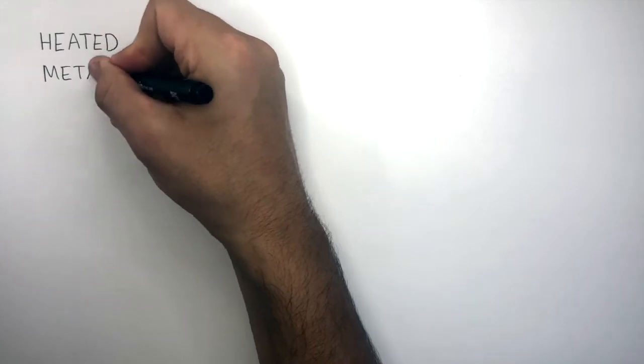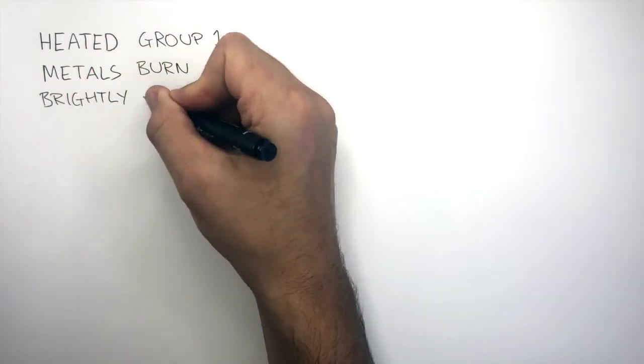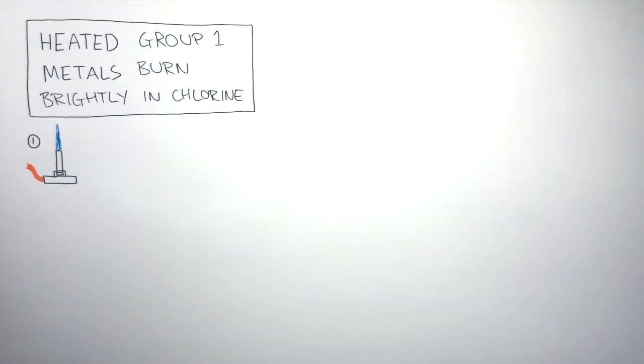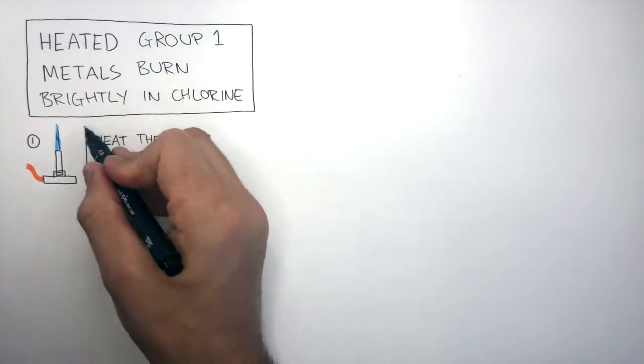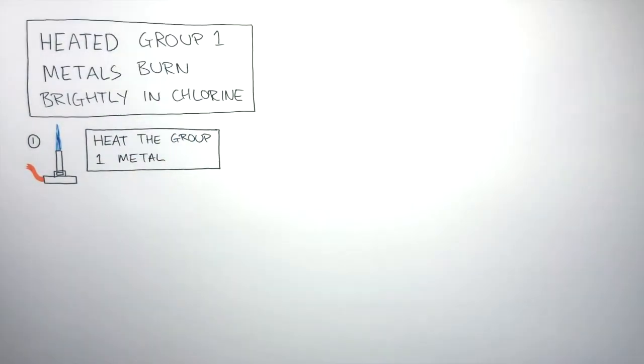So the major observation in this chemical reaction is heated Group 1 metals burn brightly in chlorine. To carry out this experiment in a laboratory, you need a Bunsen burner. This Bunsen burner is used to heat the Group 1 metal. This heat provides the activation energy for the reaction to start.